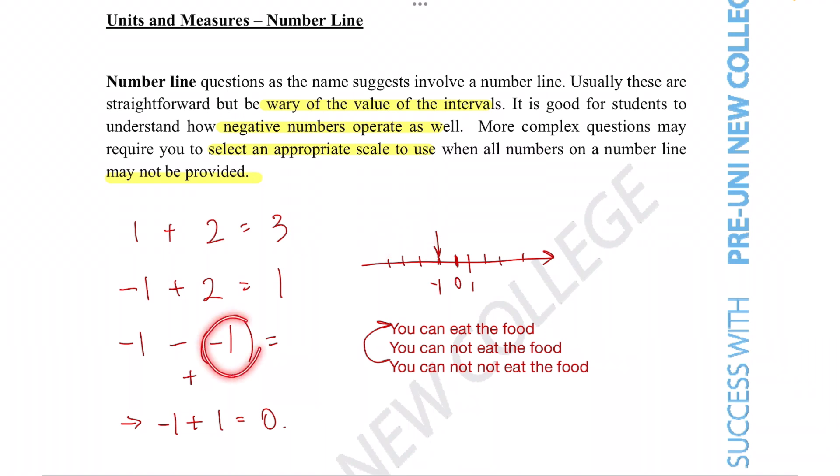But we're taking away negative one so that means we have to actually go to the right of the number line which gives us zero.